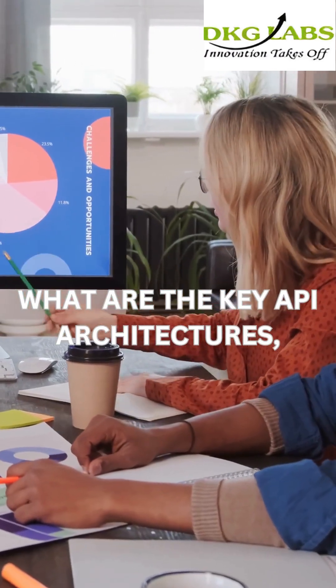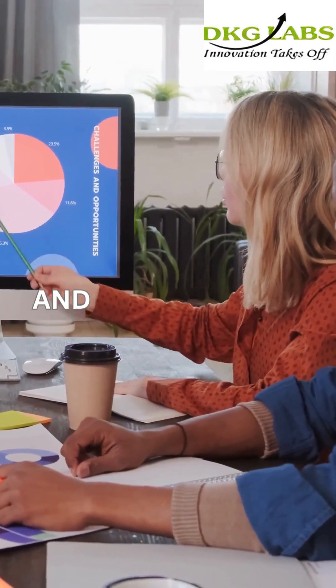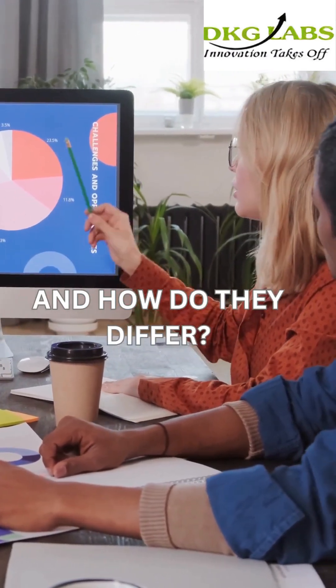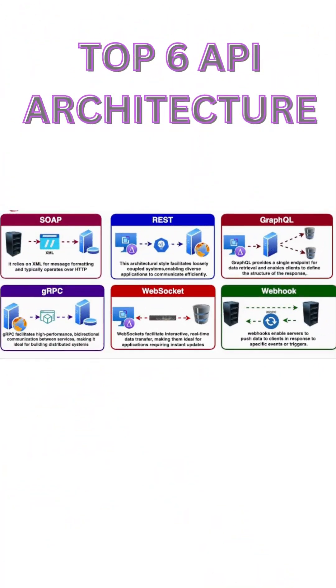What are the key API architectures, and how do they differ? There are six main API architectures.